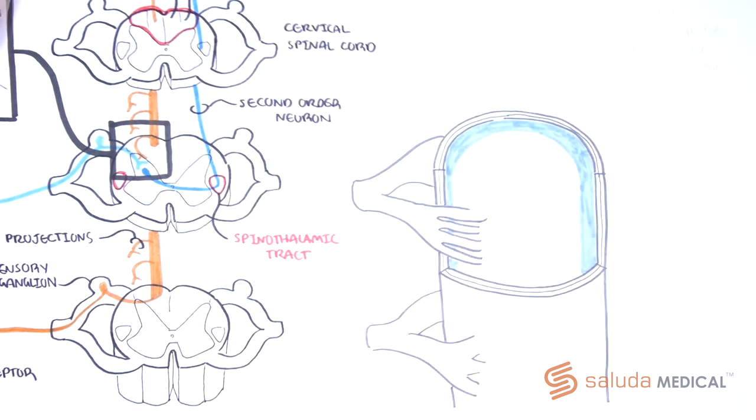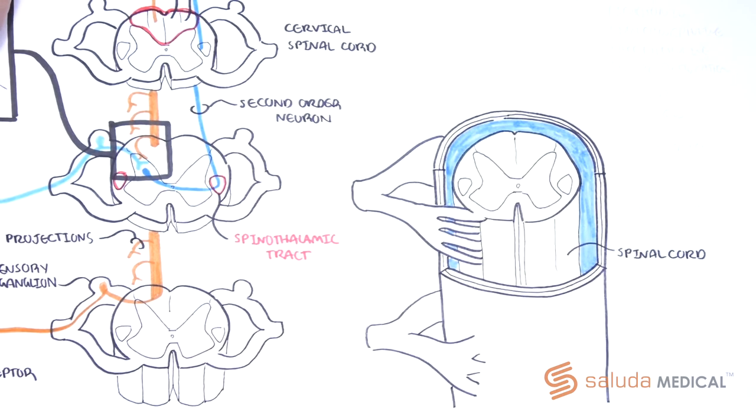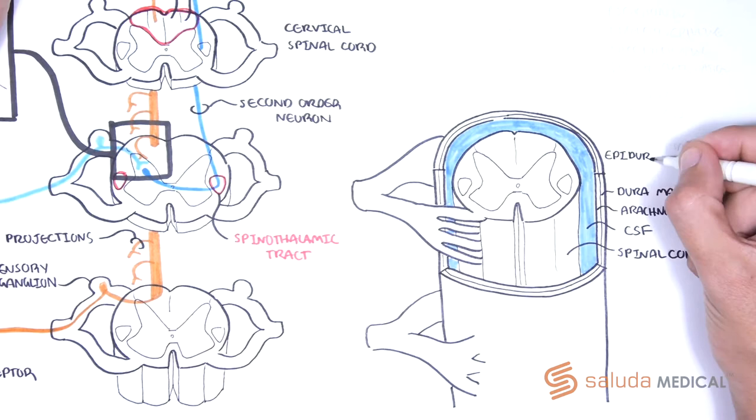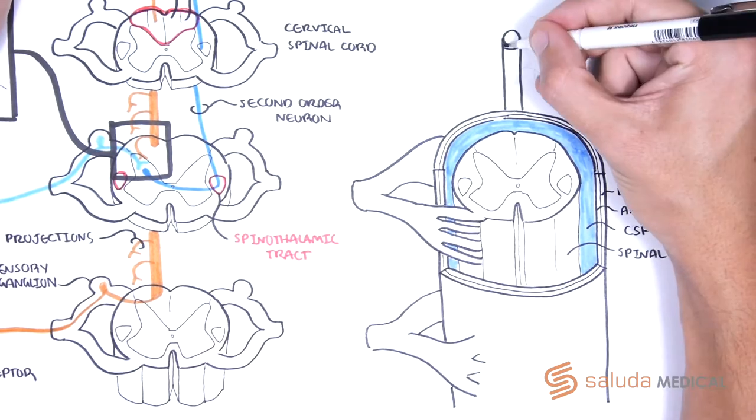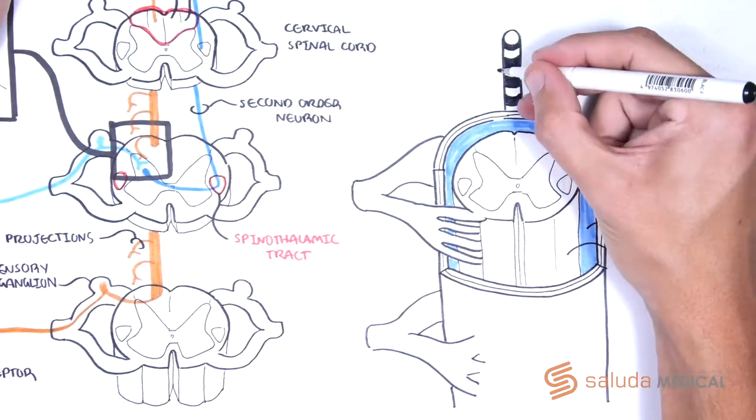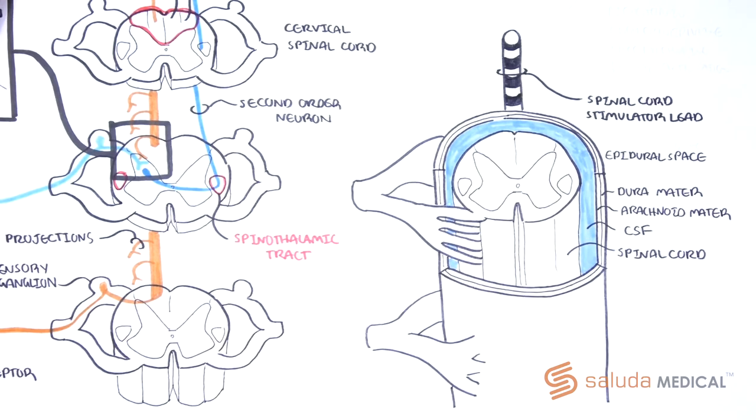The spinal cord sits in an interstitial space filled with cerebrospinal fluid, or CSF, and beneath the arachnoid matter and dura matter. Spinal cord stimulation leads are implanted in the epidural space, posterior to the spinal cord.